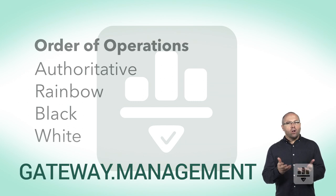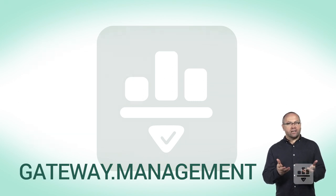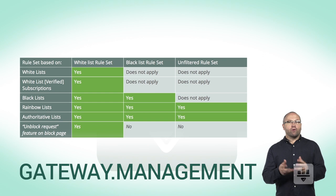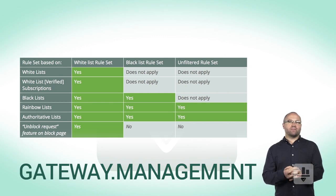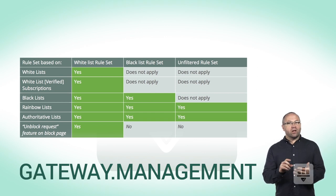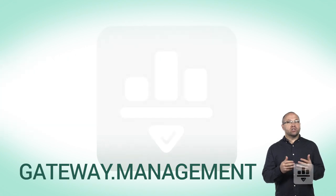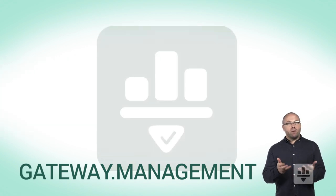Now, not all rule list types are applied to all types of rule sets. Refer to your documentation to see why whitelists, for example, are only available on rule sets based on whitelists. When an end user sees a block page, by default the unblock request button only appears when the end user device is treated with a rule set based on whitelists.